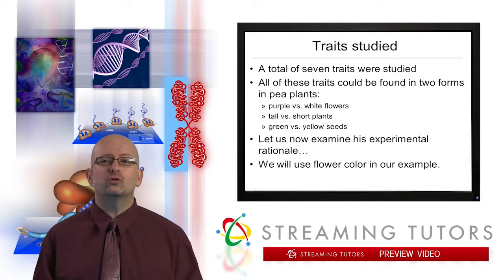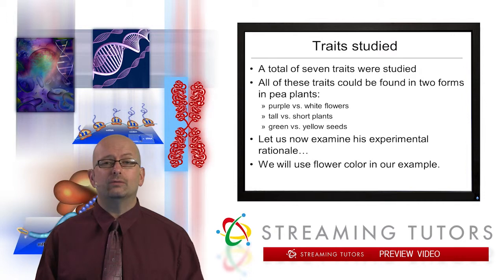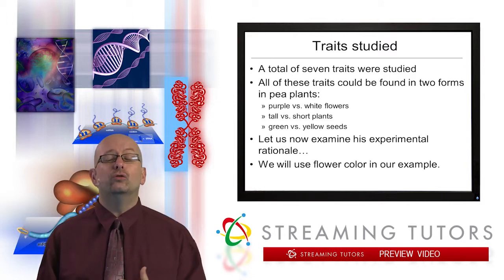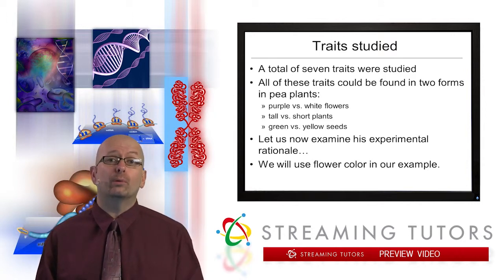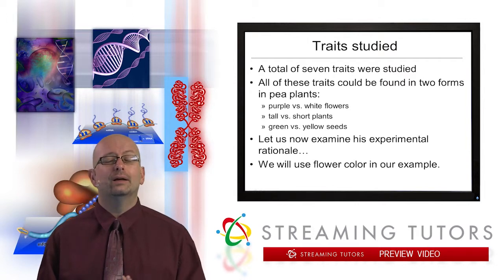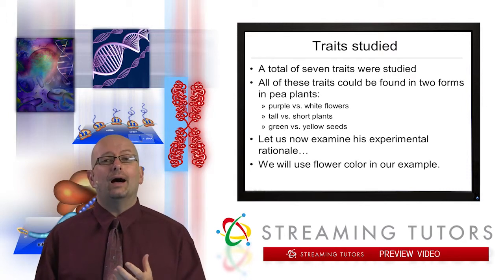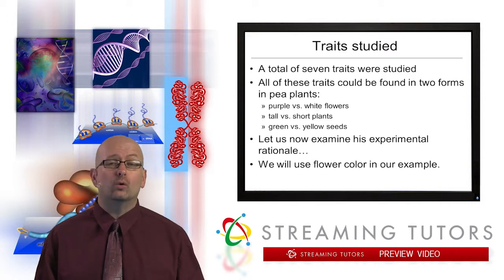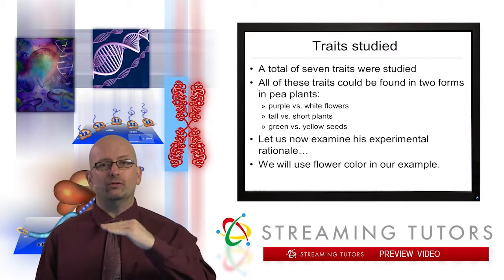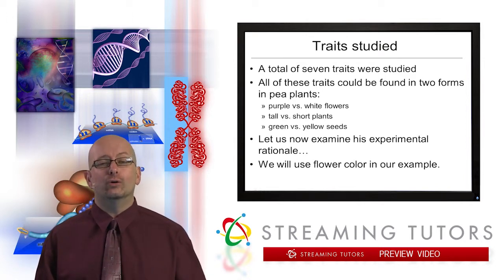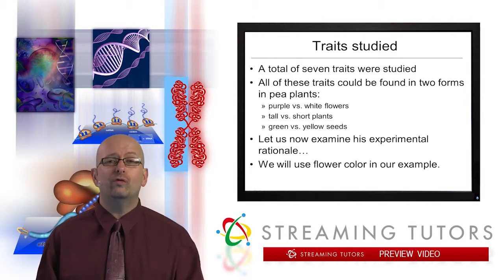Mendel studied seven traits altogether, and he chose these traits specifically because each could be found in exactly two forms in the pea plant. For example, pea plant flowers are either purple or white — no red, yellow, green, or anything in between. Mendel called these antagonistic traits or antagonistic pairs, meaning it's strictly either/or. Similarly, pea plants are either tall or short — not a range of heights. Seeds are green or yellow, and so on. The bottom line is each trait always comes in exactly two variants.